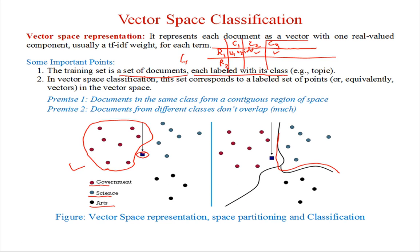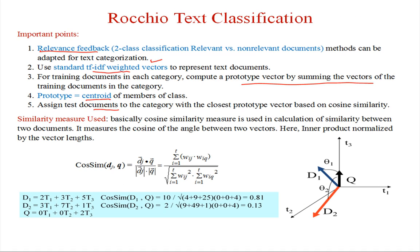Now we will learn what cosine similarity is. Cosine similarity measures the similarity between two documents. For example, to calculate the cosine similarity between document d1 and query q — represented as angle theta1 — document d1 has TF-IDF scores: term t1 has score 2, term t2 has score 3, and term t3 has score 5. These may also be simple term frequency representations rather than full TF-IDF scores.